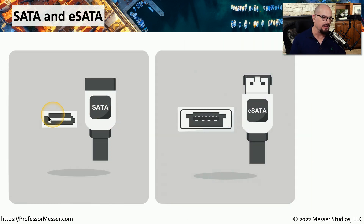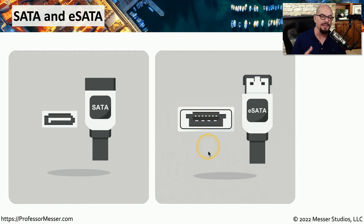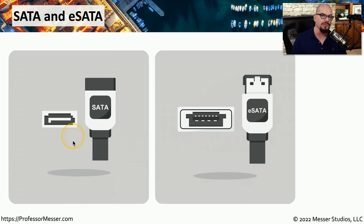If we look at a SATA interface on your motherboard, it has an L shape associated with it. If we look at an external eSATA connector, it's slightly larger and does have a very different layout. This means that if you're connecting an eSATA drive, you'll need an eSATA cable, and if you're plugging into an internal SATA drive, you will need a SATA cable.